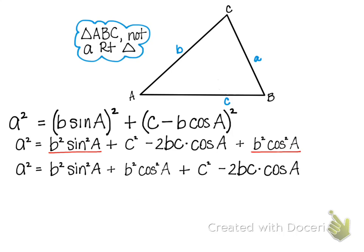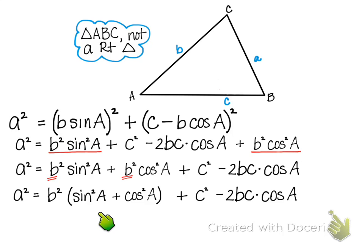I'm going to factor out the b squared, and when I factor out the b squared, I'm very happy because I notice I have the fundamental identity that sine squared A plus cosine squared A. I know that equals 1, so I'm going to have b squared times 1, so I'm going to simplify.